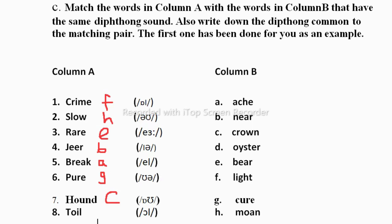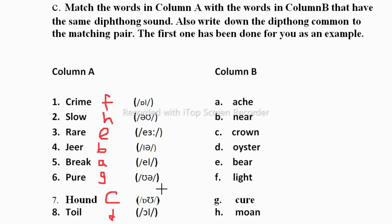Then 'hound' — which gives the /aʊ/ sound — is matching with 'crown'. And 'toy' — which gives the /ɔɪ/ sound — is matching with 'oyster'. Now we have matched all the words in column A with column B. We also need to read the phonemic symbols: /aɪ/ for crime/light, /əʊ/ for slow/moan, /eə/ for rare/bear, /ɪə/ for deer/near, /eɪ/ for break/ache, /ʊə/ for pure/cure, /aʊ/ for hound/crown, and /ɔɪ/ for toy/oyster. You can pause and take a screenshot.